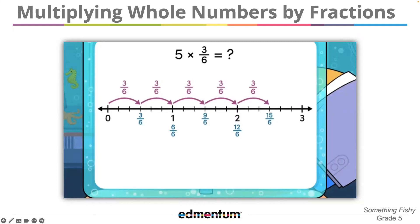So, we can see that five times three-sixths equals fifteen-sixths. That's right. We also see the jumps landed three tick marks past two. So, fifteen-sixths is the same as two-and-three-sixths. Cool.